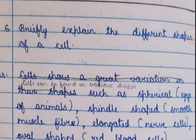Question 6: Briefly explain the different shapes of a cell. Answer: Cells can be found in various shapes such as spherical (e.g. eggs of animals), spindle-shaped (e.g. smooth muscle fiber), elongated (e.g. nerve cells), oval-shaped (e.g. red blood cells), branched (e.g. osteocytes). Some cells may not have a definite shape, e.g. amoeba, white blood cells.